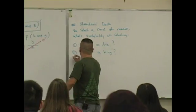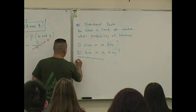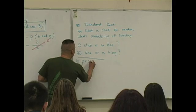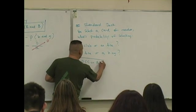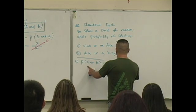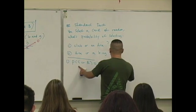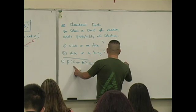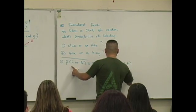Okay, here we go. First question: probability you select a club or an ace. By the addition rule, you have to determine the probability of selecting a club plus the probability of selecting an ace minus the probability of selecting a club and an ace.